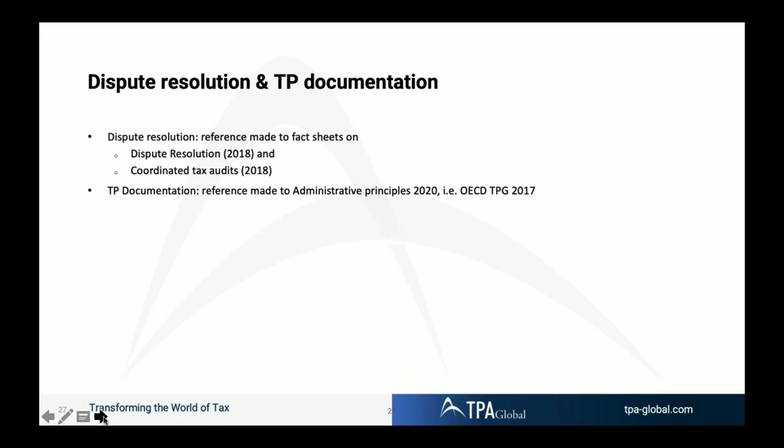On dispute resolution, the document refers to existing fact sheets from 2018 on dispute resolution and coordinated tax audits. On documentation, reference number one is made to the administrative principles 2020, and then to the OECD transfer pricing guidelines. By looking at the German transfer pricing documentation requirements, you can essentially look at the OECD and you will know what has to be documented in Germany.